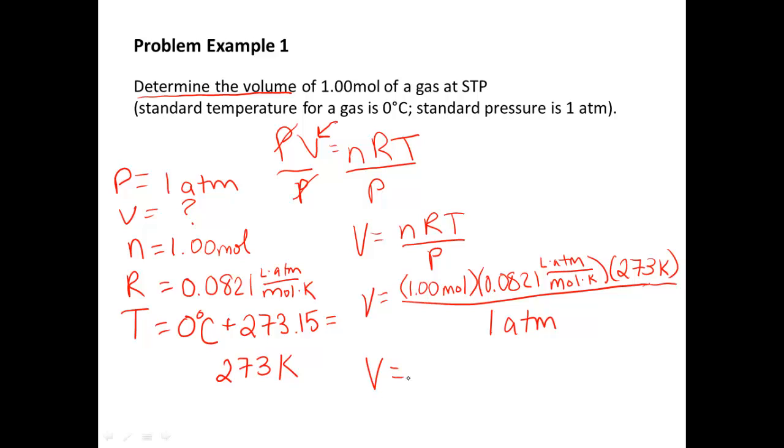So that means when we solve this, we're going to be looking for 3 significant figures. Now let's make sure that our units cancel out. Mole cancels out with mole, Kelvin cancels out with Kelvin, atmosphere cancels out with atmosphere. We're left with liters. So why don't you enter that into your calculator and make sure you get the same thing as me. I get 22.4 liters. That is the volume of 1 mole of gas at STP.